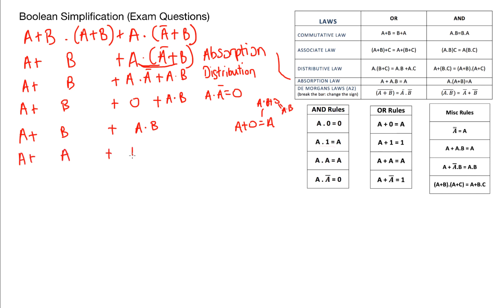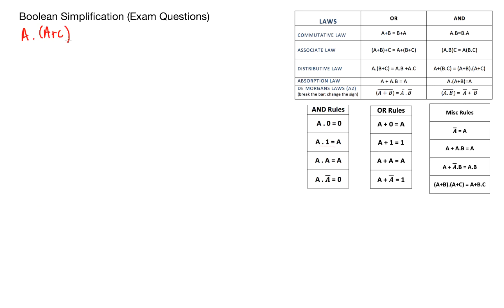And in the next step I've used the commutative law in order to swap some of my terms around which leaves me with A or A or B and B. And then I can just apply my OR rules. A or A is just A and B and B is just B. Leaving my final answer to be just A or B. Hopefully you're getting the hang of this now. Just a couple more and we will finish.